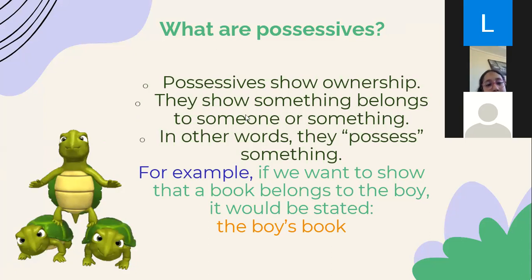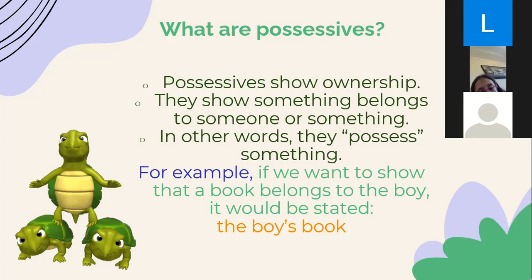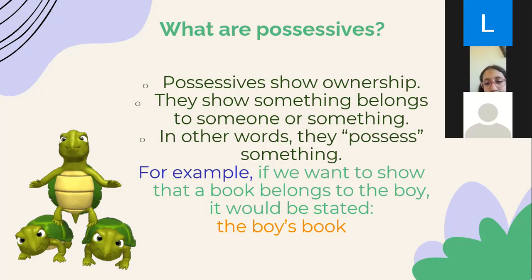When we say possessive noun, we mean that someone owns something, or something owns something else. For example, the book belongs to the boy, so we say 'the boy's book.' That's how we express the possessive noun: the boy's book, Dida's bottle, Karim's car, the student's books, the school's part. The part belongs to the school, so we say 'the school's part.'